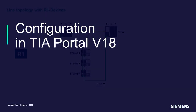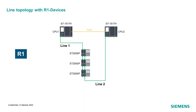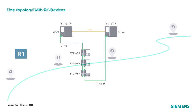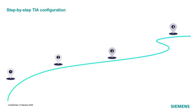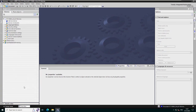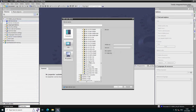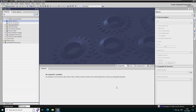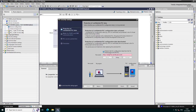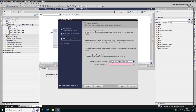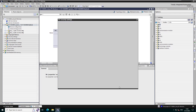Our configuration example is the following: a redundant system based on CPU 1517H and three R1 stations. Such a configuration is done in four steps. Step 1: in your TIA project, add a new redundant controller — here a CPU 1517H — and adapt the security settings required for your application.